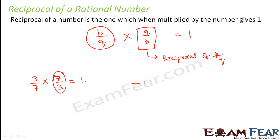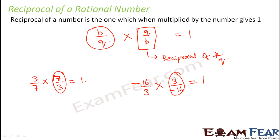Similarly, consider minus 16 by 3. What would be the reciprocal of this? It would be 3 by minus 16. When you multiply them, you get 1. So 3 by minus 16 is the reciprocal of minus 16 by 3, and minus 16 by 3 is the reciprocal of 3 by minus 16. This is what we mean by reciprocal.